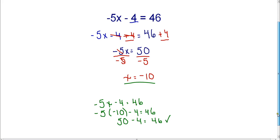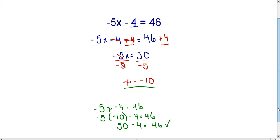Okay? So again, this was a two-step equation. We performed two steps in order to solve. First, we added 4 to both sides. And then we divided by negative 5 on both sides. And this is how you solve a two-step equation.